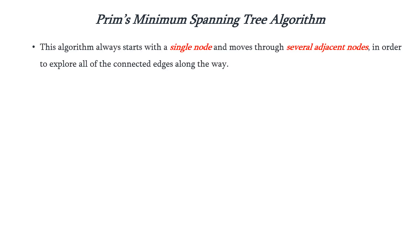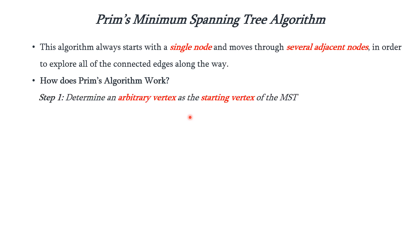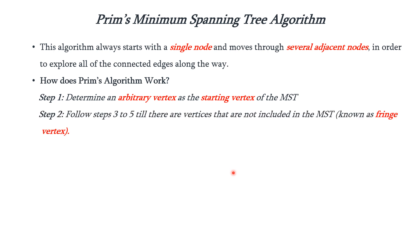Basically this algorithm starts with a single node and moves through several adjacent nodes in order to explore all of the connected edges along the path. First step is we have to determine an arbitrary vertex which acts as the starting vertex of the minimum spanning tree. After this we have to follow steps 3 to 5 till there are vertices that are not included in the MST.